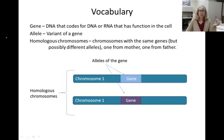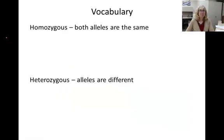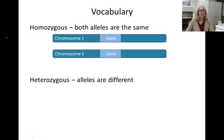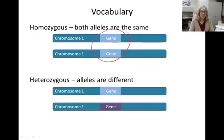Different alleles can produce different proteins or RNA sequences, which will have different effects in the cell. If the two copies on the homologous chromosomes are the same allele, then the organism is considered homozygous for that allele. If the copies are different, then the organism is heterozygous for that allele.